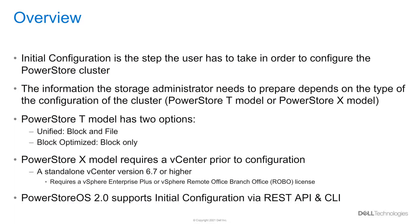What is initial configuration in PowerStore? Initial configuration takes the PowerStore system or systems from a factory state to an operational state specific to the customer environment. It is the first step that the user needs to do once their network configuration is complete to bring the system online. A dedicated initial configuration wizard walks the user through this configuration process.